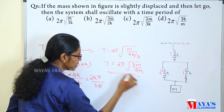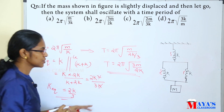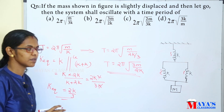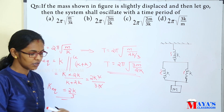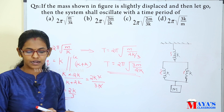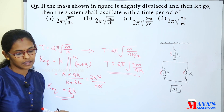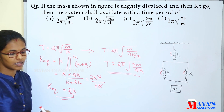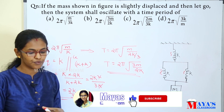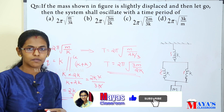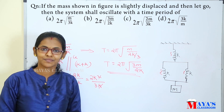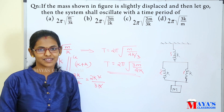Therefore, the time period t is equal to 2π into root of 3m divided by 2k. This is all about this. Thank you for watching.